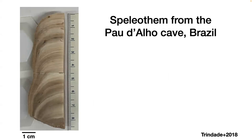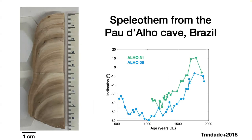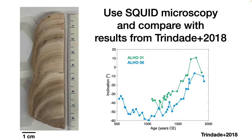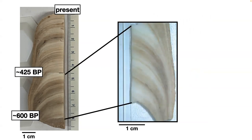The speleothem we're using is from the Paudalio cave in Brazil — a sample obtained from a group that led the study. Here are the inclination values showing measurements from before. The idea is to use SQUID microscopy on a sample that already has magnetic studies done with traditional paleomagnetic techniques, essentially comparing results to see how reliable our SQUID results are. We obtained a one-millimeter-thick section from this particular sample, which ranges from the present to about 600 years before present.